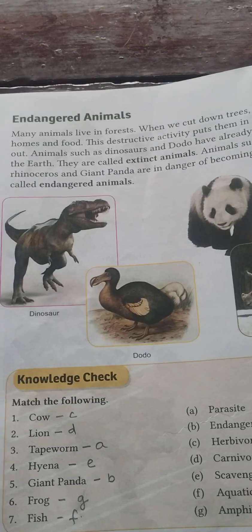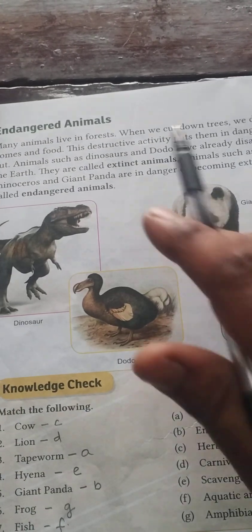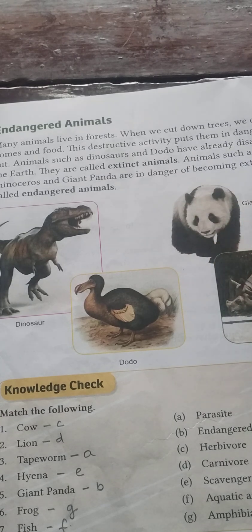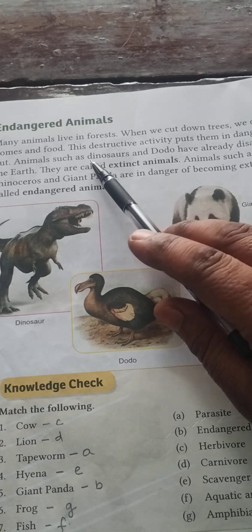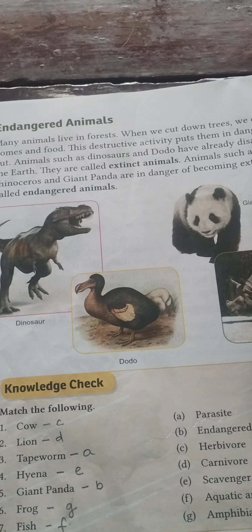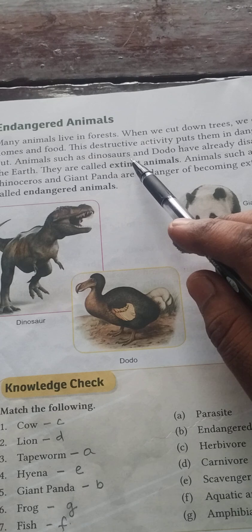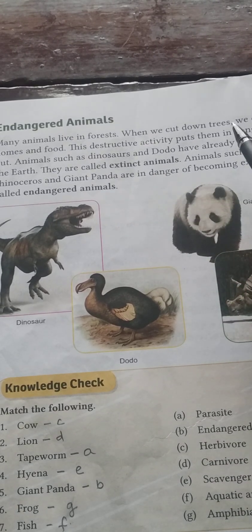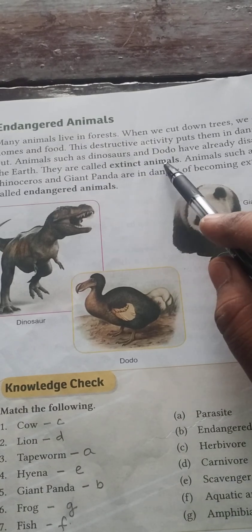Many animals live in forests. When we cut down trees, we destroy their homes and food. This destructive activity puts them in danger of dying out. Animals such as dinosaurs and dodo have already disappeared from the earth. They are called extinct animals.